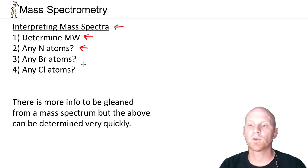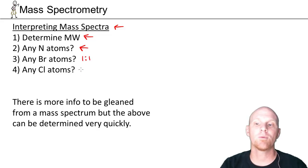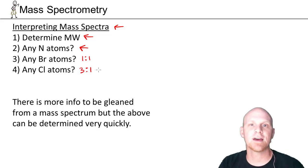If you don't have an M+2 peak, you've got no bromine or chlorine. But if you do have an M+2 peak, if it's in a 1 to 1 ratio, you've got bromine. If it's in a 3 to 1 ratio, you've got chlorine. And all of that can be determined within 10 seconds.